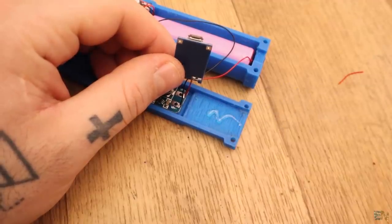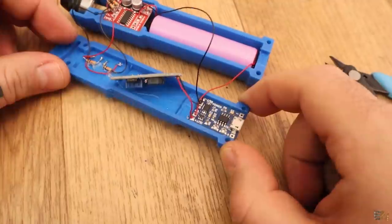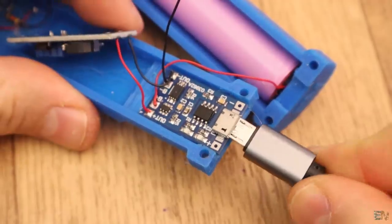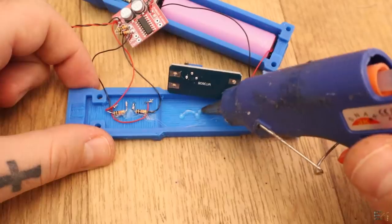Now I place the charging module on the top side of the case like this using some hot glue. Make sure you can connect the USB cable to the module. Now glue the boost converter as well.